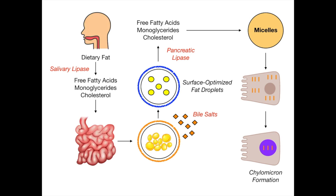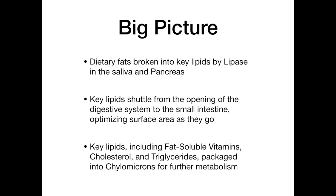Let's conclude part one by talking about the big picture. The dietary fats were broken into their key lipids by lipase in the saliva and then the pancreas. These key lipids were shuttled from the mouth to the small intestine, optimizing surface area as they go. Key lipids including fat-soluble vitamins, cholesterol, and triglycerides were ultimately packaged into chylomicrons, which are going to await further metabolism in the lipid transport biochemical pathway. Rewatch it if you need to understand how we got from the fat in the food you eat to the packaging of the chylomicrons — everything in the next video is going to build upon what we just talked about.